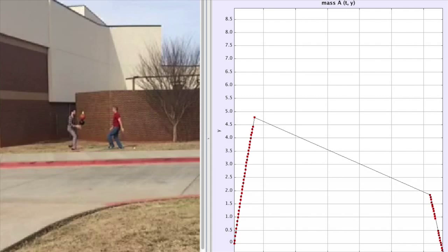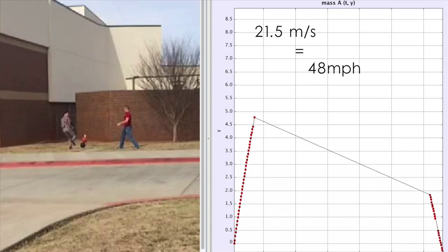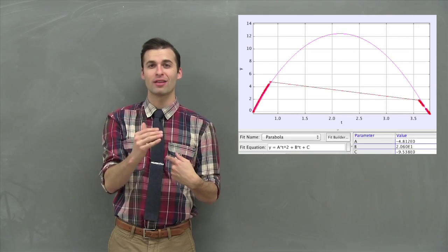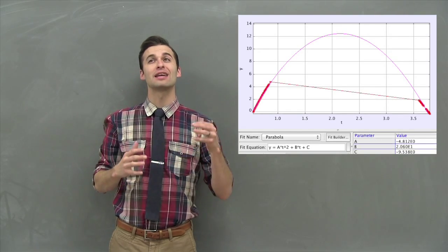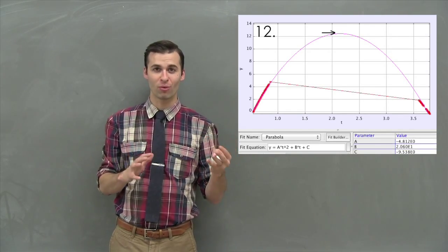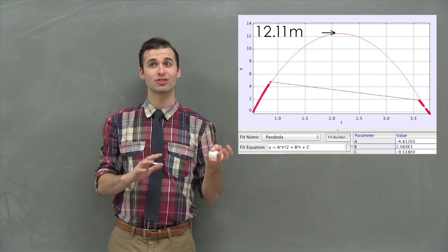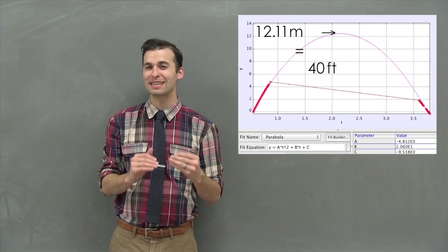So our best drop, we were able to get the golf ball to go about 21.5 meters per second, which is about 48 miles per hour. Now, it went so high that it went out of our camera's field of view, so I had to make a mathematical prediction about how high the golf ball could go. And it went about 12.11 meters, which is almost 40 feet in the air.